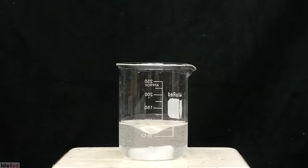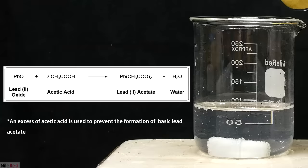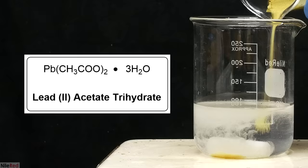At first, I only had a small amount, so you can see what the reaction looks like. The reaction between lead oxide and acetic acid produces lead acetate and water. Because I'm doing this in the presence of excess water, the lead acetate that forms is the hydrated form, lead acetate trihydrate.